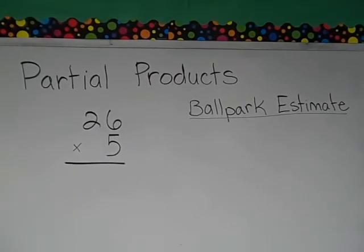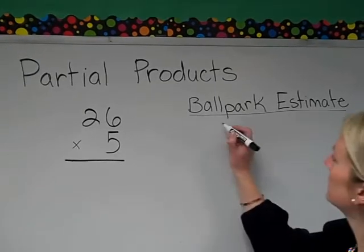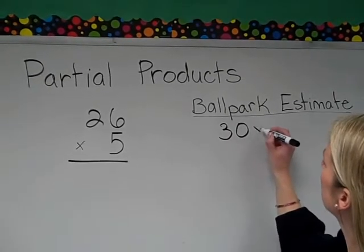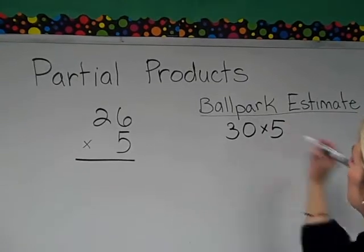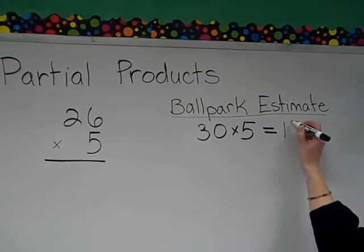To begin with, we will round 26 to 30, keeping the 5, multiplying them together for our estimate of 150.